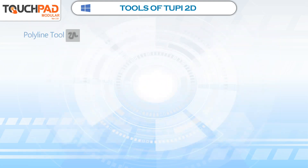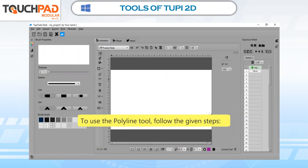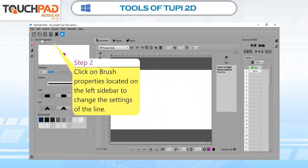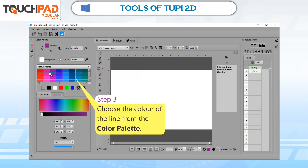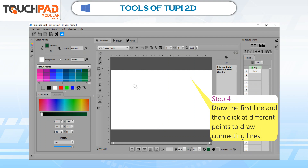Polyline Tool. This tool helps to draw different shapes and diagrams in the workspace. It helps to draw closed figures and interconnected lines. To use the Polyline Tool, follow the given steps. Step 1: Click on the Polyline Tool from the toolbox. Step 2: Click on Brush Properties on the left sidebar to change the settings of the line — choose the stroke thickness, pattern, etc. as per your desire. Step 3: Choose the color of the line from the color palette. Step 4: Draw the first line and then click at different points to draw connecting lines.